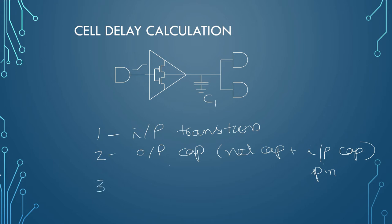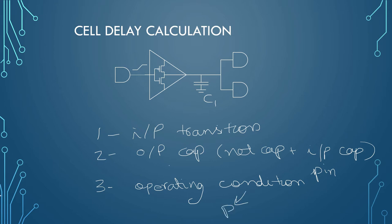The third important factor is your operating condition — the condition under which your device under test is operating. Operating conditions also affect the delay of a cell. Operating conditions can be of three different types: P for process, V for voltage, and T for temperature. These three conditions actually affect the delay of the cell.